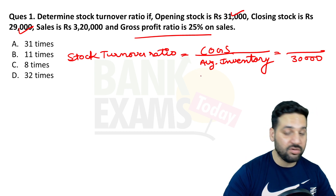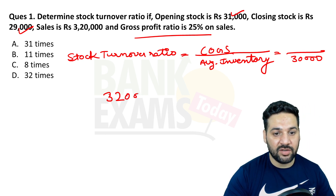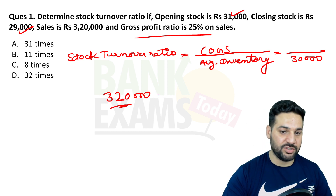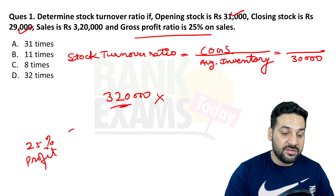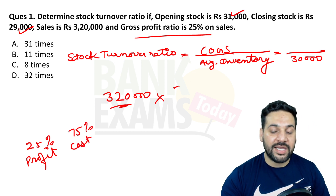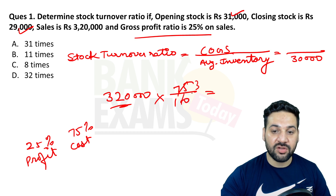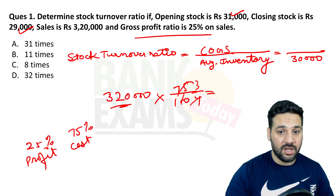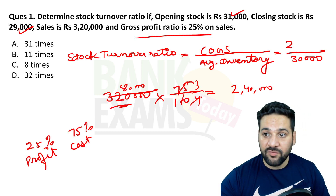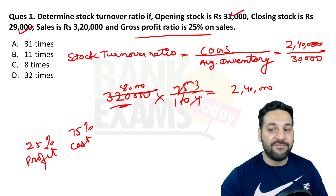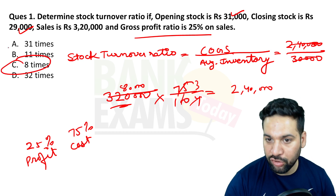To calculate cost of goods sold: sales is 3 lakh and 20,000. Profit is 25% on sales, so cost is 75% of sales. 75% of 3,20,000 is 2,40,000. So cost of goods sold is 2,40,000 divided by average inventory of 30,000, which gives a stock turnover ratio of 8 times.